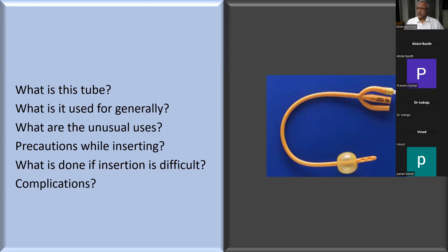A non-urethral narrowing is a tight phimosis - you may not even be able to see the external meatus. Apply a lot of jelly and gently stretch the skin with the help of artery forceps. If it's very tight and you still can't see enough of the meatus, give local anesthesia and do a small dorsal slit of the prepuce. Then you will have an opening big enough to see the meatus.